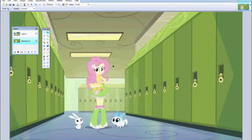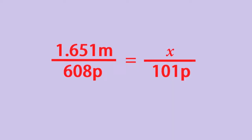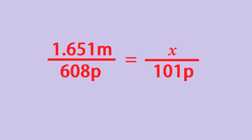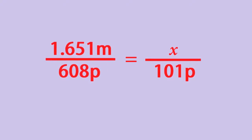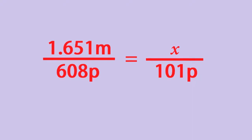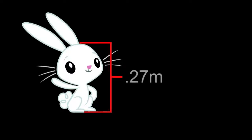In this program I'll be using, she is also 608 pixels tall. Angel Bunny, not including his ears, is 101 pixels tall. We can set this up in a ratio. Here's what it would look like: 1.651 meters over 608 pixels — Fluttershy's height in meters over height in pixels — equals X over 101 pixels, where X equals Angel's height in meters. If you do the math, this puts Angel at around 0.27 meters.